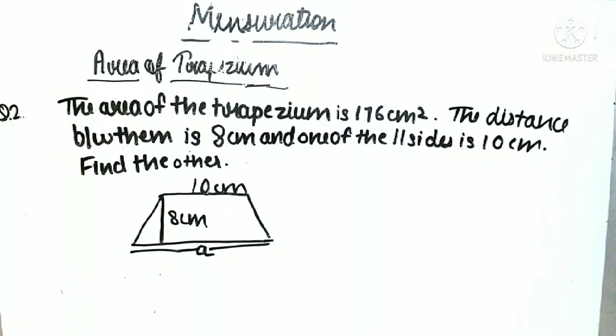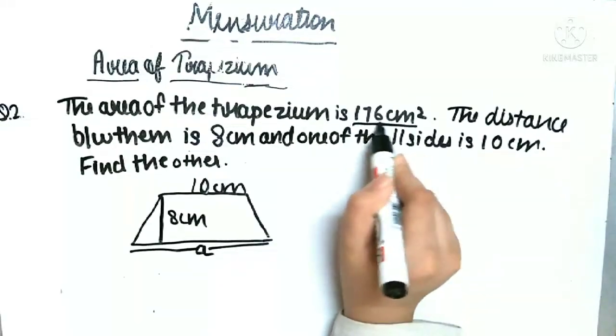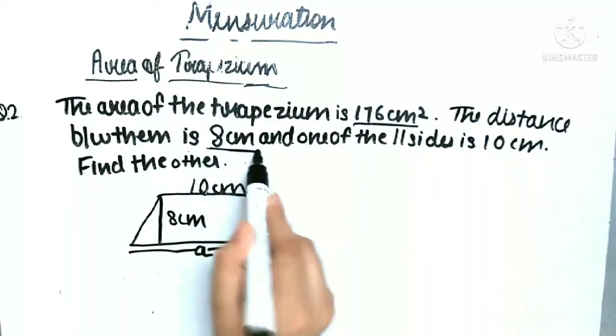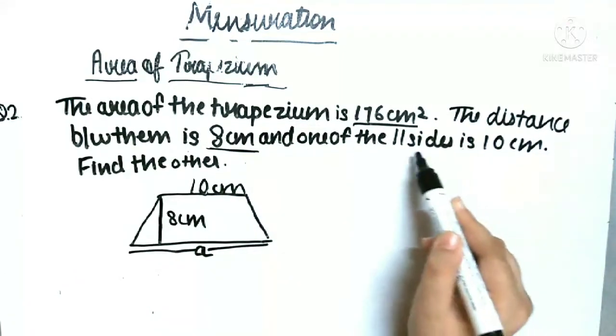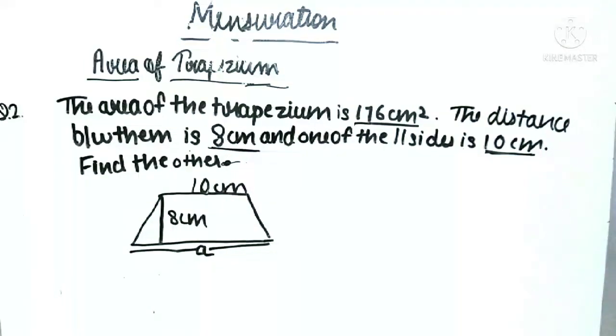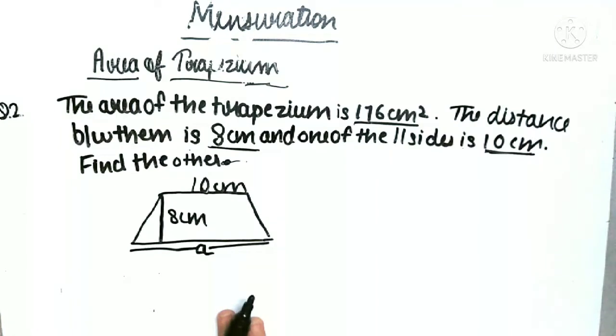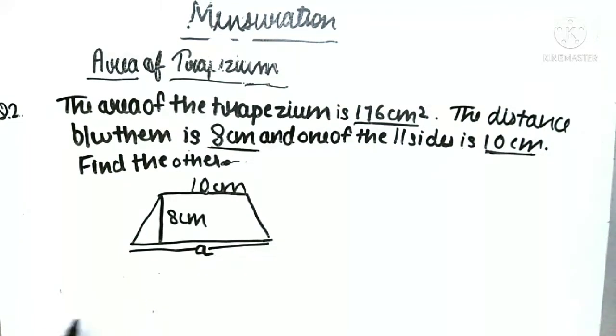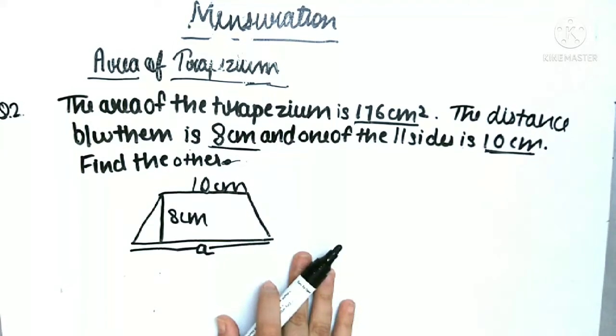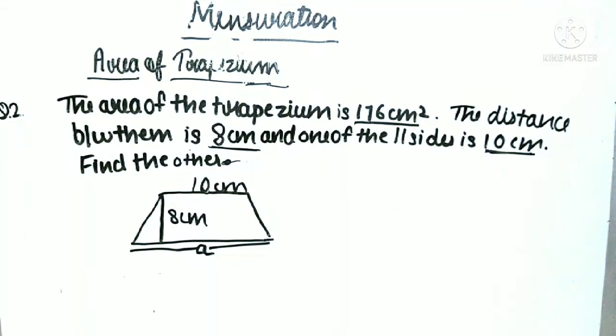Now let's move on to another question. In this question, the area of trapezium is given to us as 176 centimeter square. The distance between the parallel sides is 8 centimeter, and one of the parallel sides is 10 centimeter. We have to find the other side, so the side which is not given to us we have taken as a. Here I have made a rough diagram of trapezium which can help in solving the question.